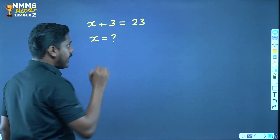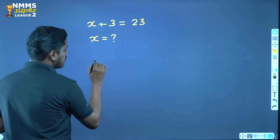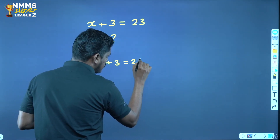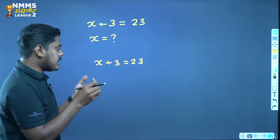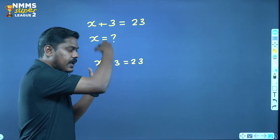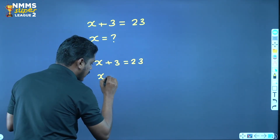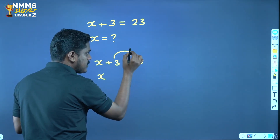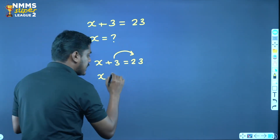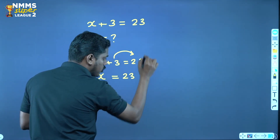We will calculate the value of x. x plus 3 is equal to 23. We will move the 3 to the other side, so it becomes minus 3. That gives us 23 minus 3.